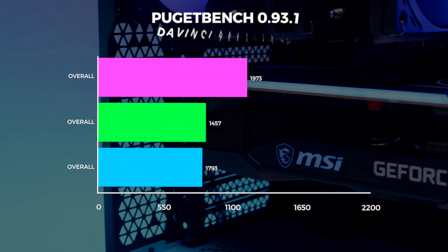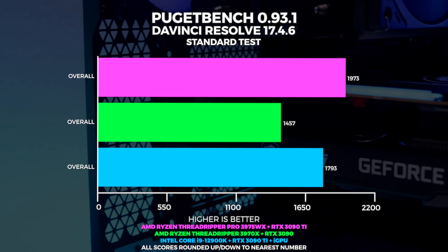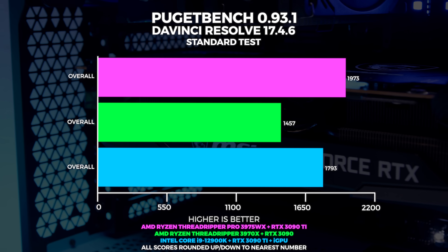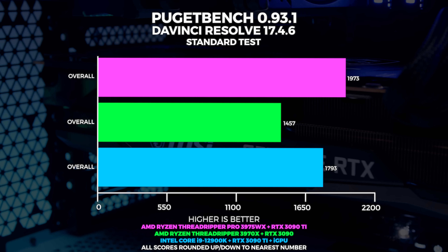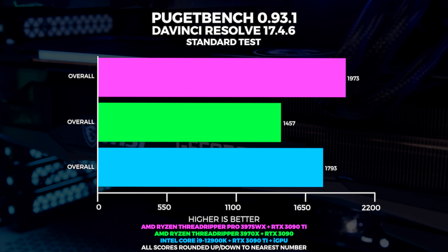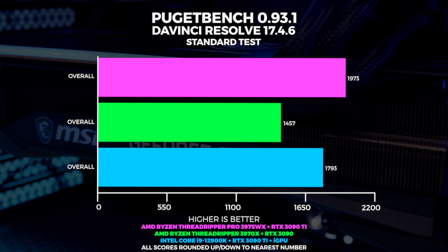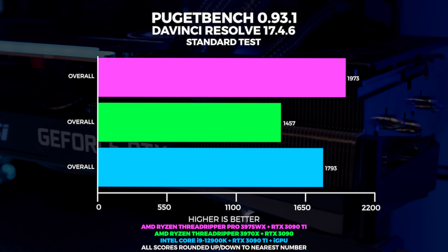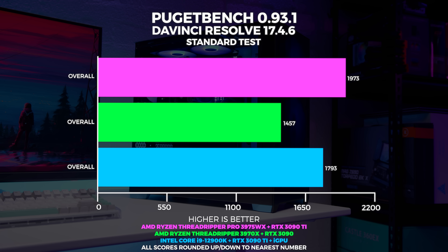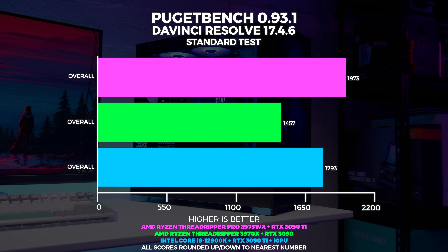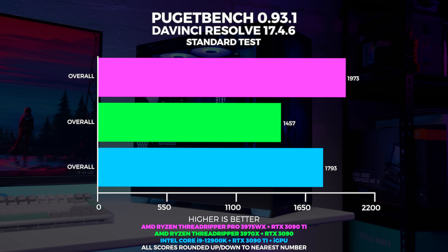Lastly, we've got DaVinci Resolve. I have to say from the beginning we don't use Resolve that often and it doesn't really work with our workflow — I included this because a lot of people will ask for these metrics. With the overall performance in Resolve, the Threadripper Pro system easily outpaces both the 3970X and the 12900K system. This is because Resolve is far more optimized for multi-core CPUs than the Adobe suite, because Adobe just doesn't listen.